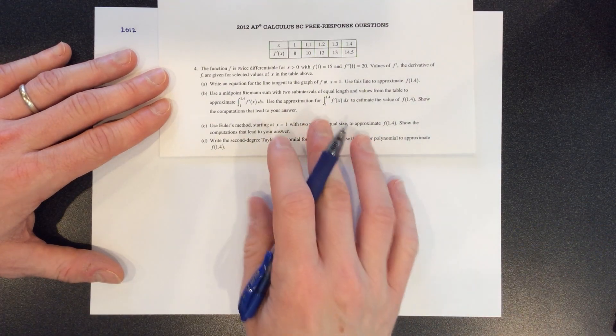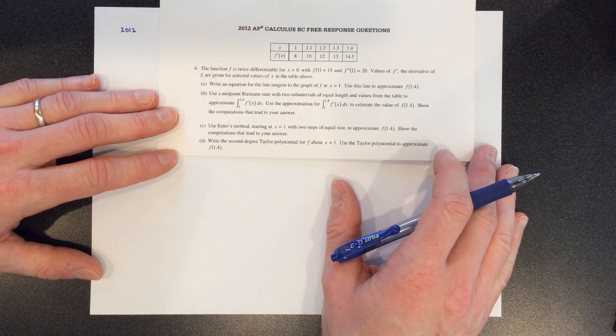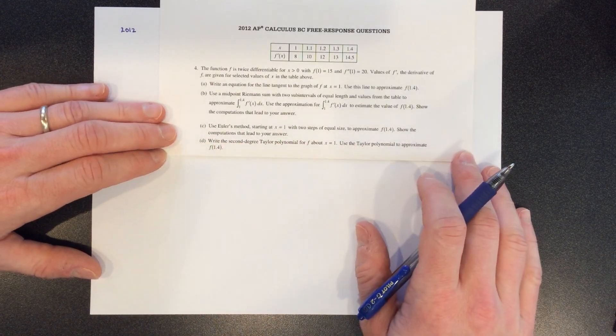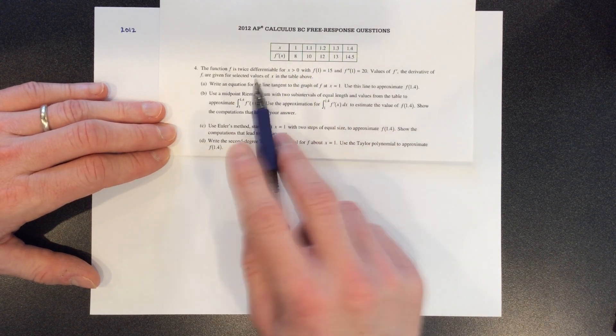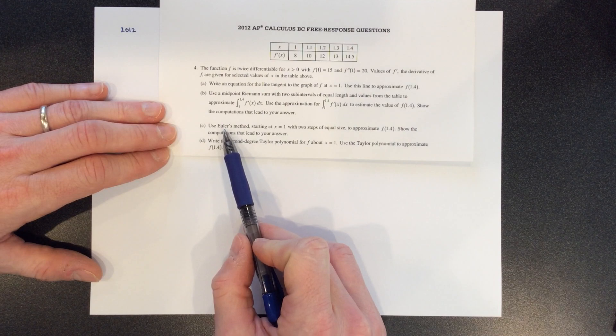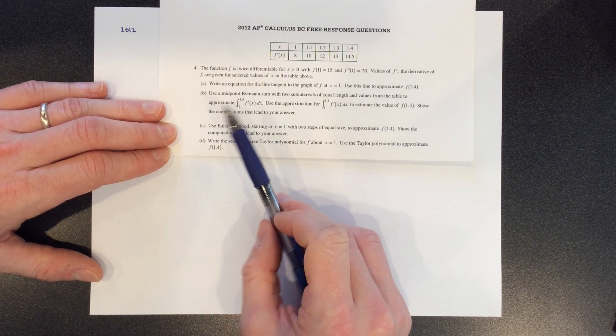Okay, let's look at 2012 and I think there are actually two of them from 2012 that involve Taylor series. This first one is really a data table problem where they give you information kind of in a data table format and then they ask you some things, but some Euler method, some Riemann sums that don't really have anything to do with Taylor polynomials.